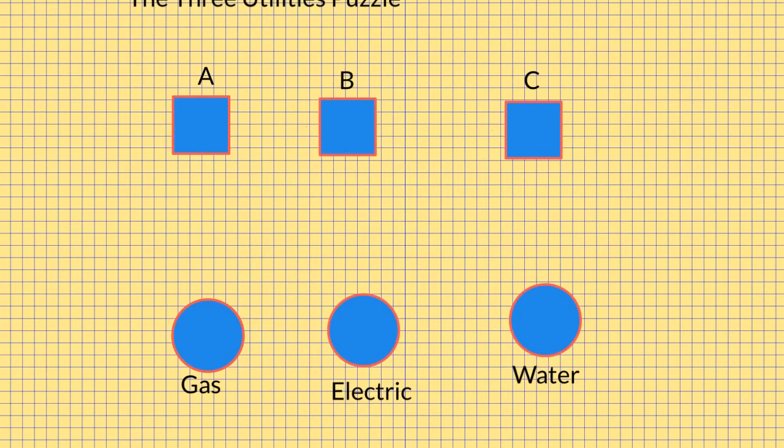This problem of embedding a K3,3 in the plane so that no edges cross is often called the K3,3 utilities puzzle.